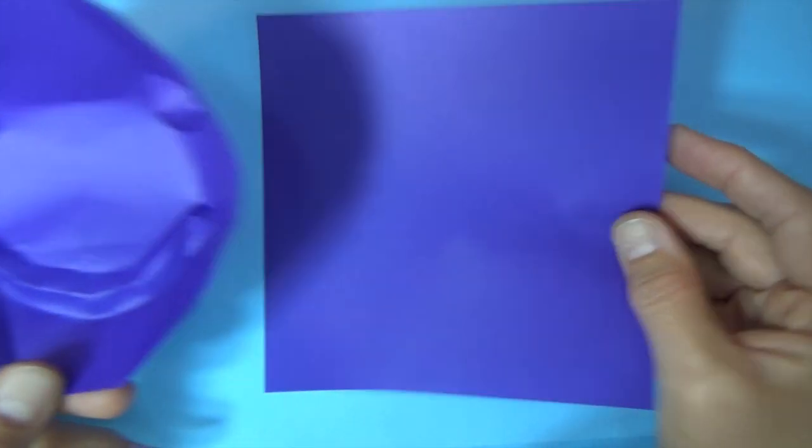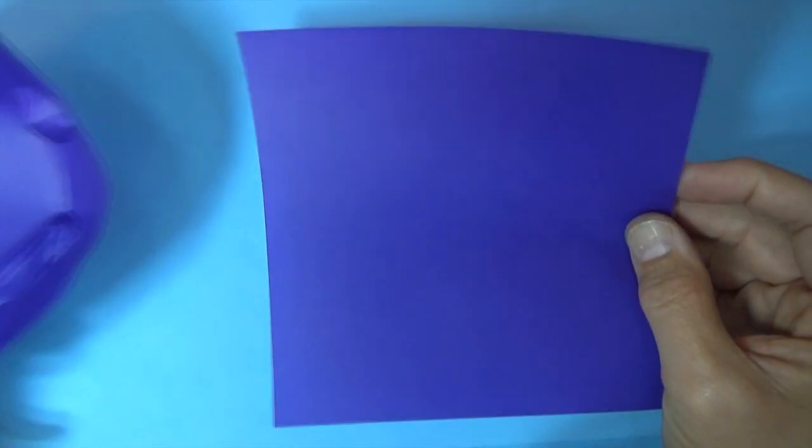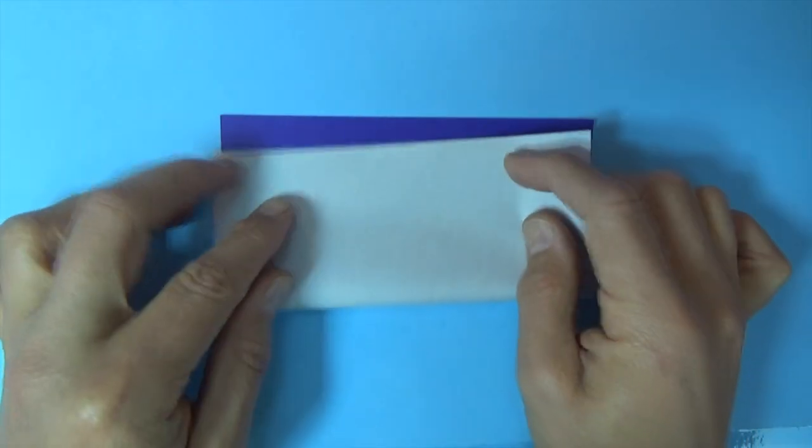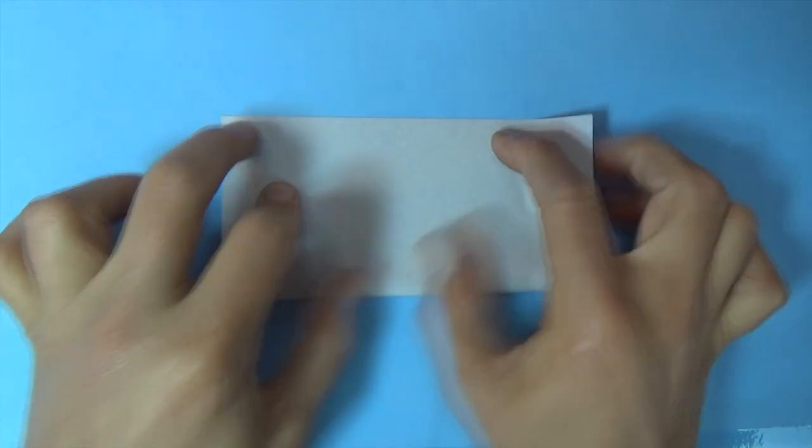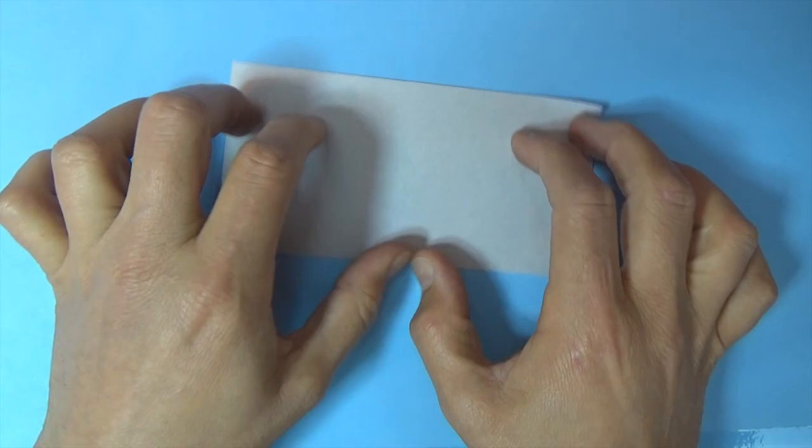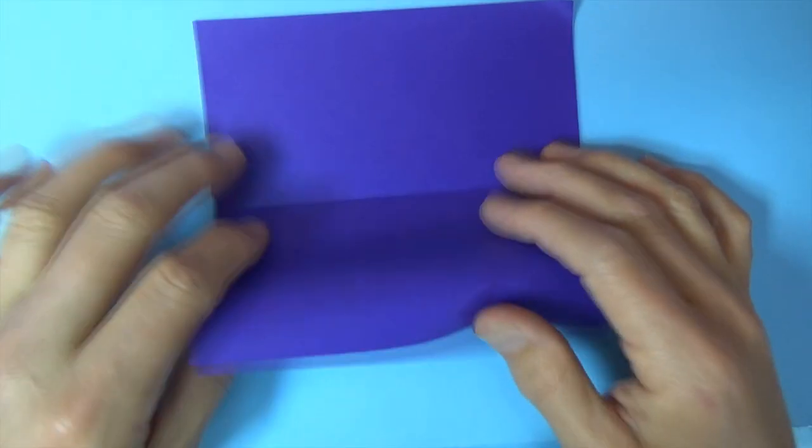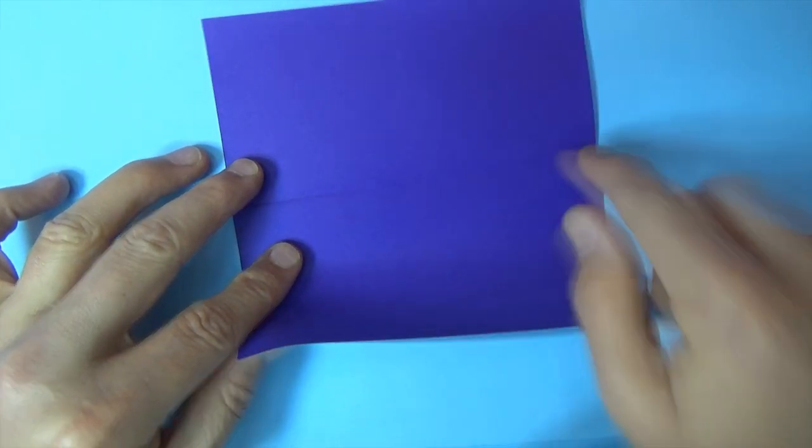All right, so for this model I'm going to use a six inch square of kami, but you could use a sheet of printer paper cut square. Let's begin colored side up and let's valley fold in half. Try to make really precise folds and crease sharply.